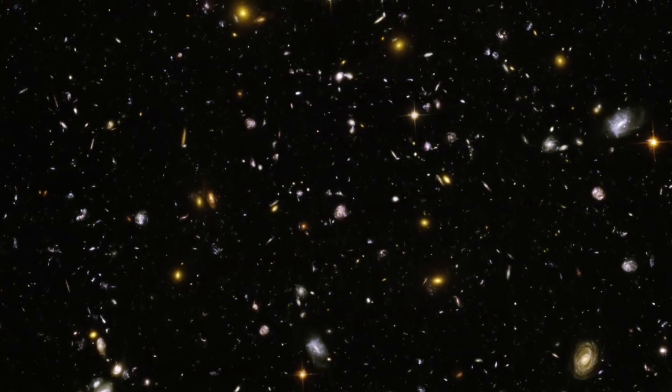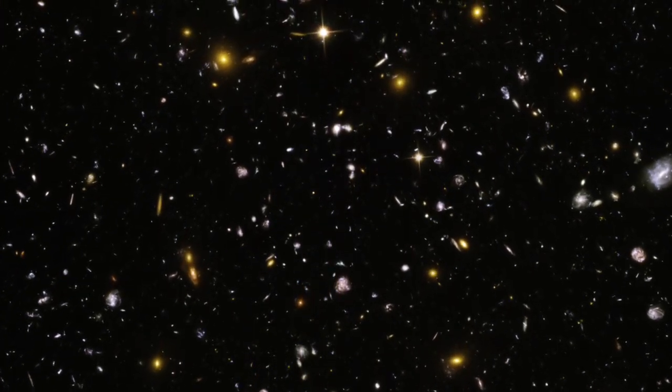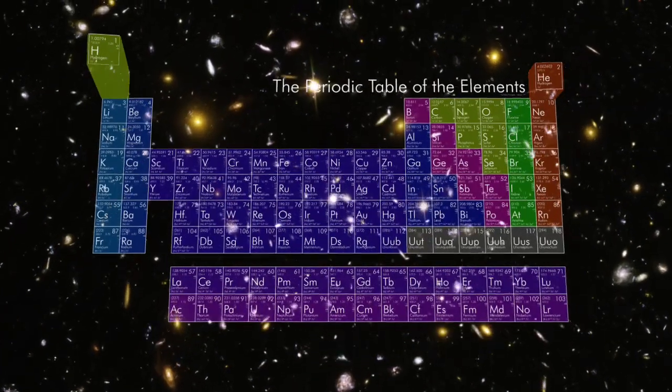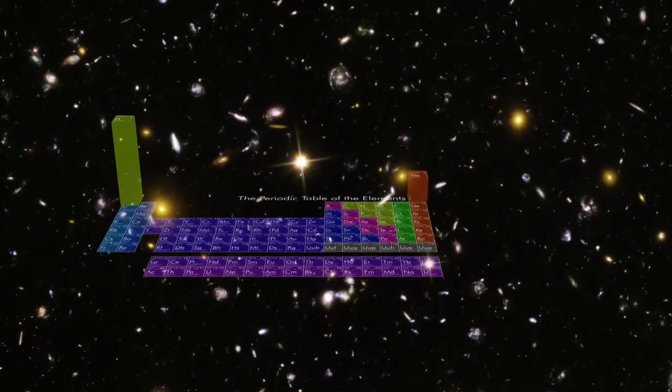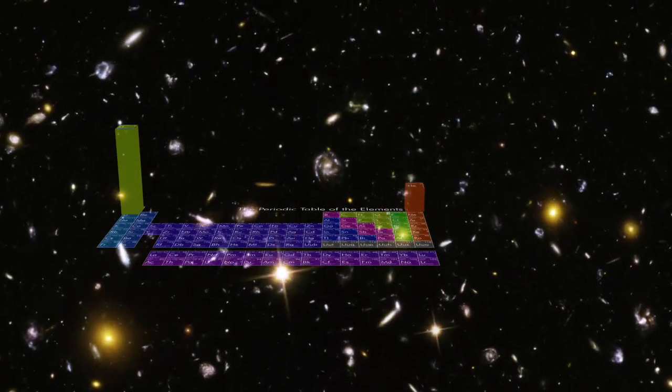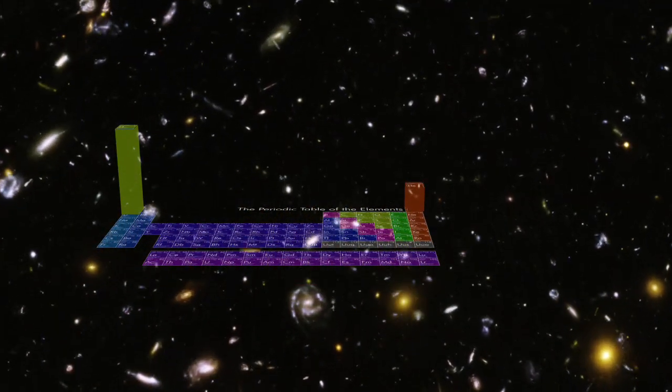What is the universe made of? The vast majority of it consists of the wispy cosmic lightweights hydrogen and helium. Everything else on the periodic table contributes only a small fraction of the whole.